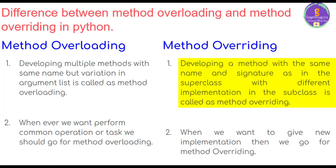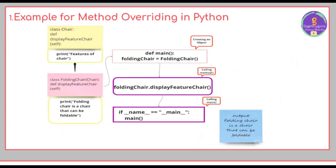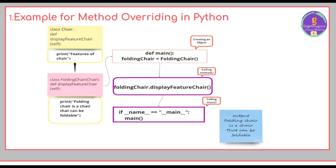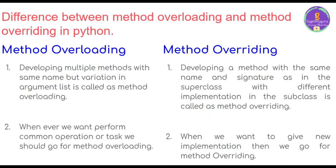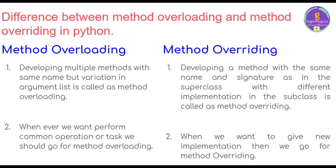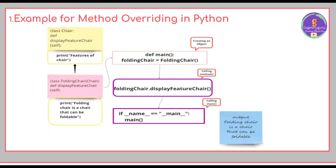Let's see the example for method overriding. In this case there are two classes. The first class is 'Chair' and the next is 'FoldingChair', which has the same method but a different implementation in the subclass. The second difference is: whenever we want to perform a common operation or task we should go for method overloading. In method overriding, when we want to give a new implementation, we go for method overriding. Here Chair is the base class and FoldingChair is the derived class.